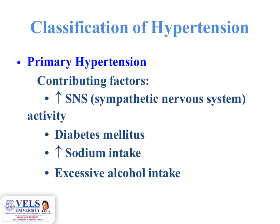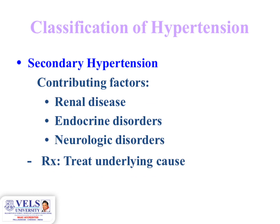Contributing factors for primary hypertension include increased sympathetic nervous system activity, diabetes mellitus, increased sodium intake, and excessive alcohol intake. Contributing factors for secondary hypertension include renal disease (acute or chronic renal failure), endocrine disorders such as hypothyroidism, hyperthyroidism, or diabetes, and neurological disorders. For all these secondary causes, treatment must address the underlying cause.